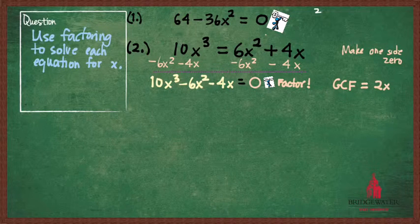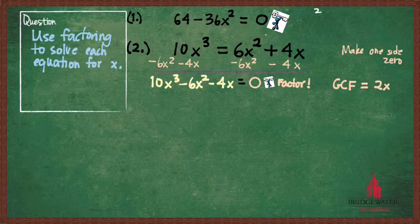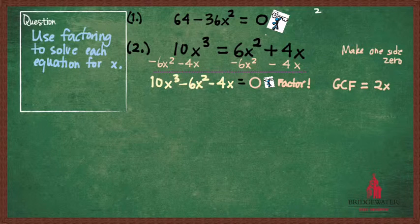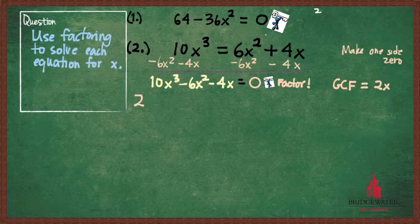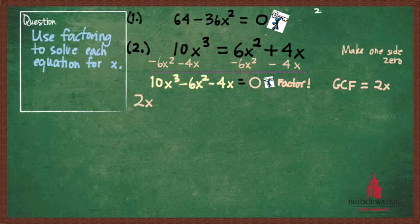So what is the GCF of the three terms 10x³, 6x², and 4x? 2x. Great. 2 is the greatest common factor of 10, 6, and 4. And the lowest, the least power of x in those three terms is x to the power 1. So that makes 2x our greatest common factor.